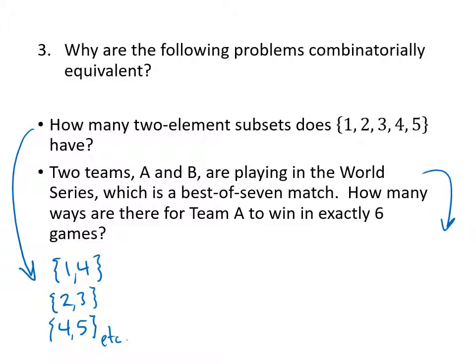For this second problem, we're talking about a World Series, which is a best of seven match, and we're wondering how many ways are there for team A to win in exactly six games. One of the things you have to know about a best of seven match is that the winner is the first team to get four wins. The idea is that you only need a seventh game if you're tied all the way to that seventh game. That would mean 3 and 3, so you need that seventh game to figure out who the winner is.